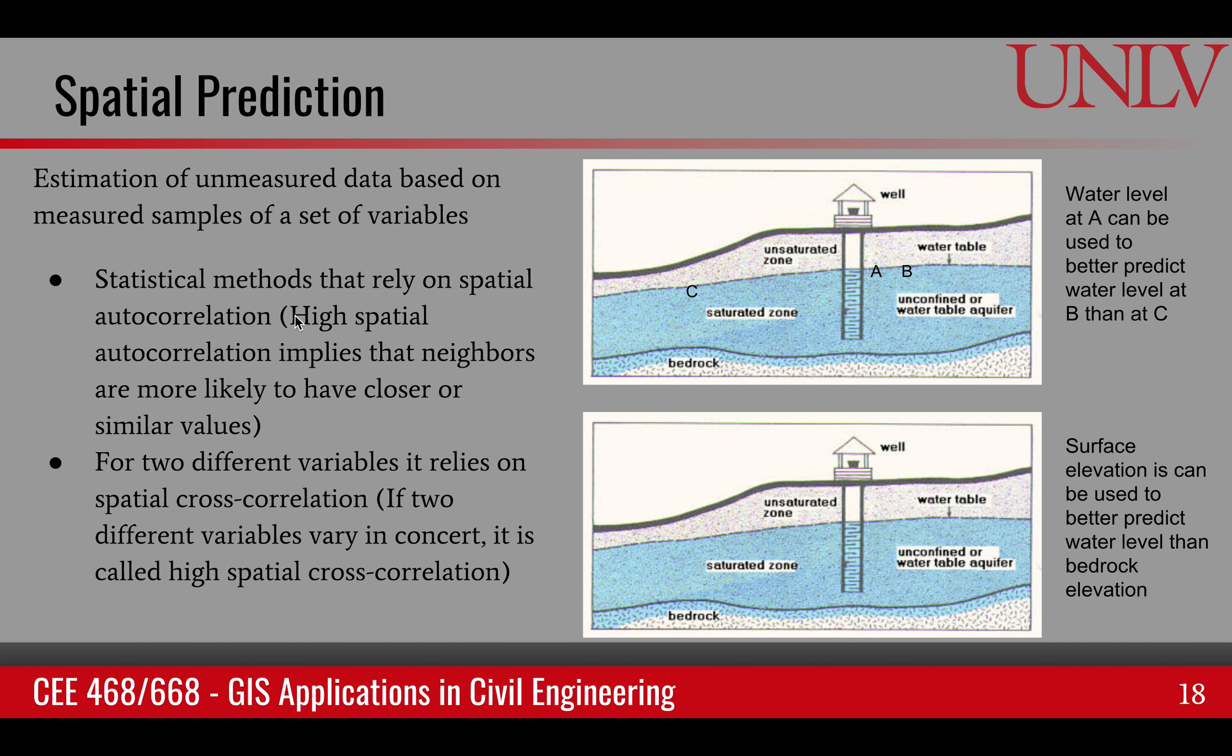This is based upon statistical methods that rely on spatial autocorrelation. Here's an example of groundwater. Water level at point B needs to be predicted, and water level at point C needs to be predicted. A can be a better predictor for B than C, because C is far away. In other words, the spatial autocorrelation of the water table between A and B points will be much higher than the spatial autocorrelation between point A and C.